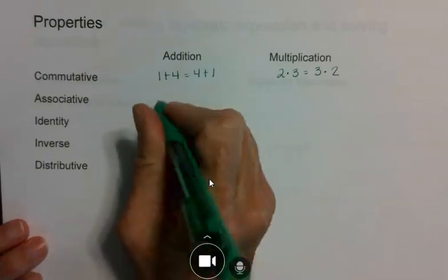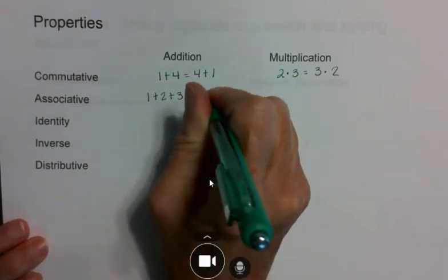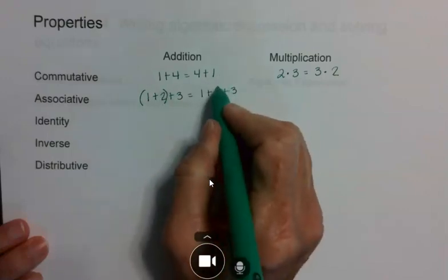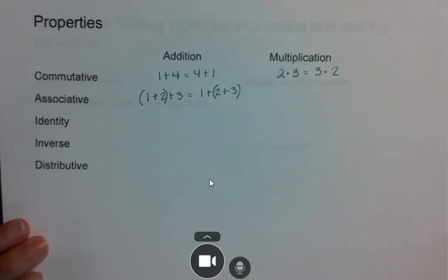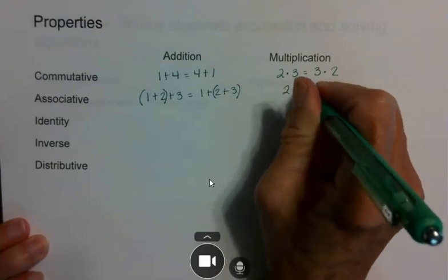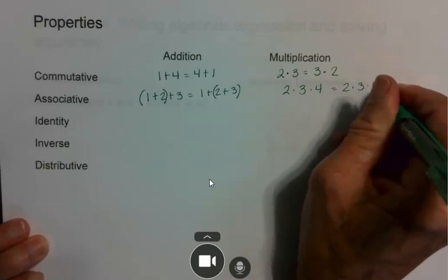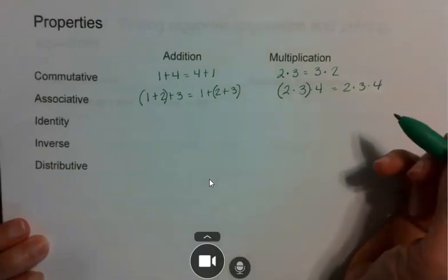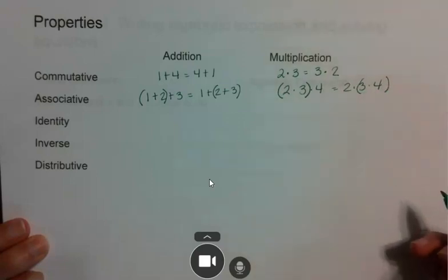Associative is always about who the number associates with. So 1 plus 2 plus 3 equals 1 plus 2 plus 3 — the order hasn't changed — but the parentheses can move, changing who they associate with from one side to the other. For multiplication, same thing: 2 times 3 times 4 equals 2 times 3 times 4. If the order changes, you're talking about commutative. So 2 and 3 associate on this side, while 3 and 4 associate on the other.